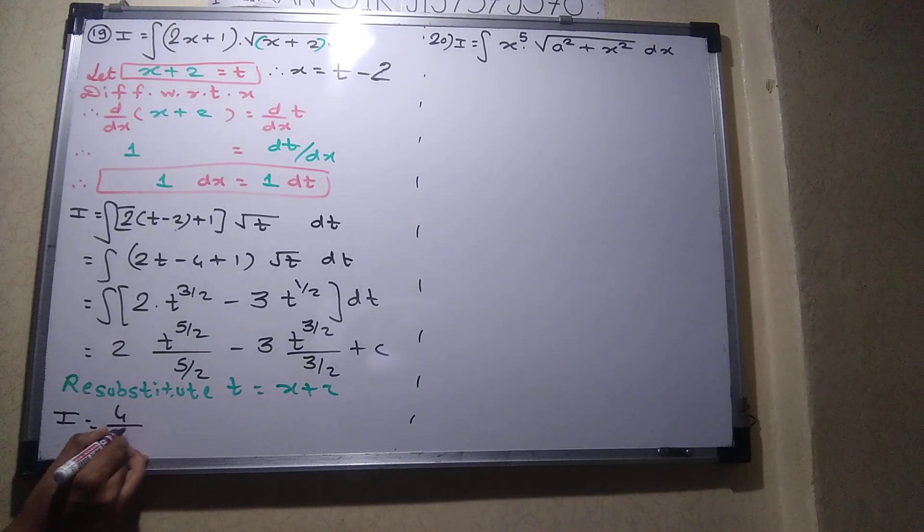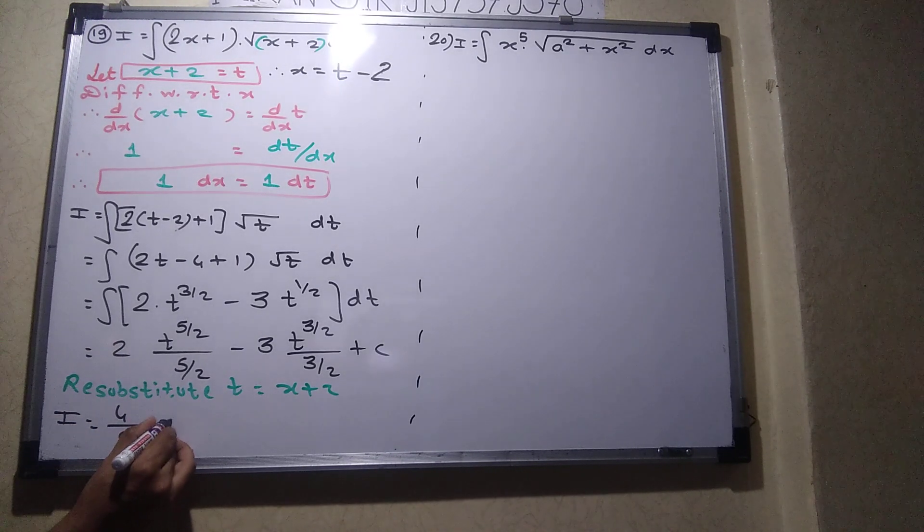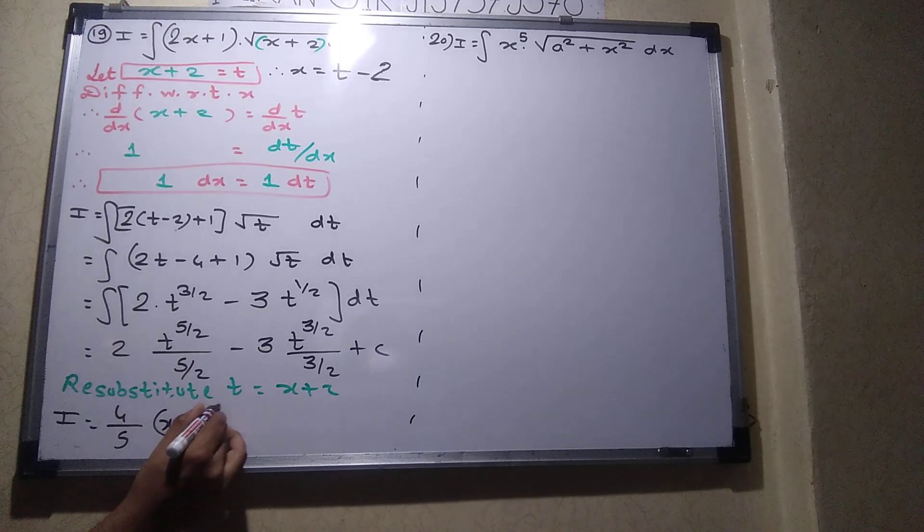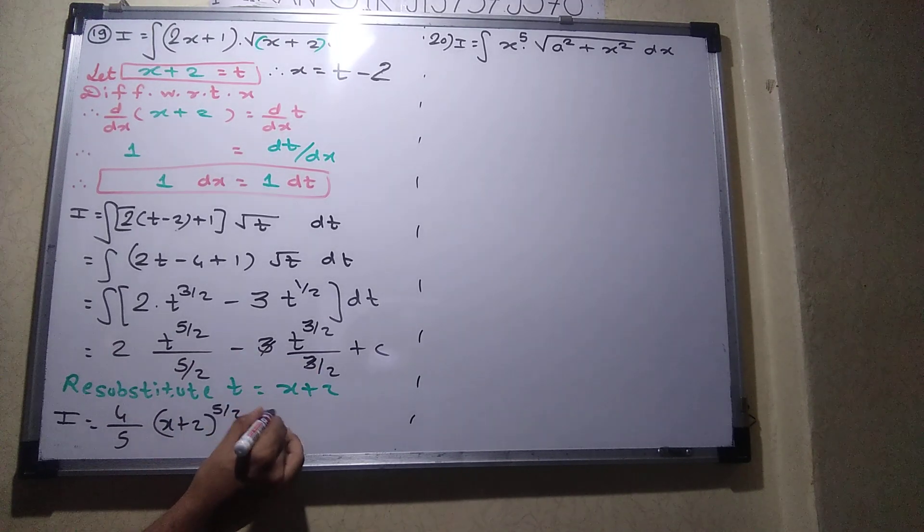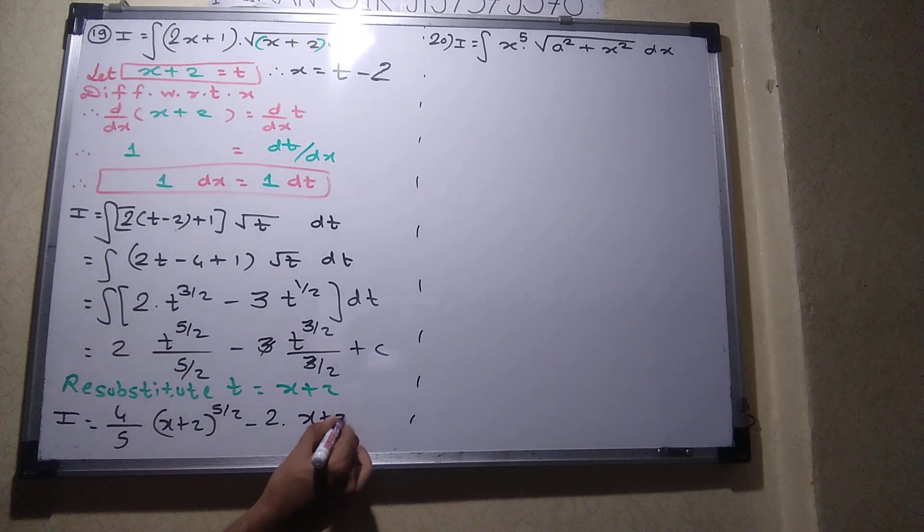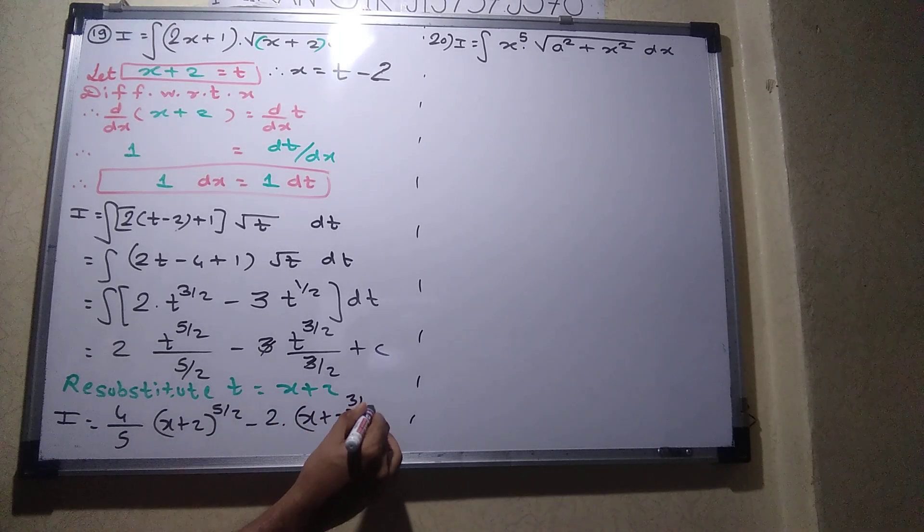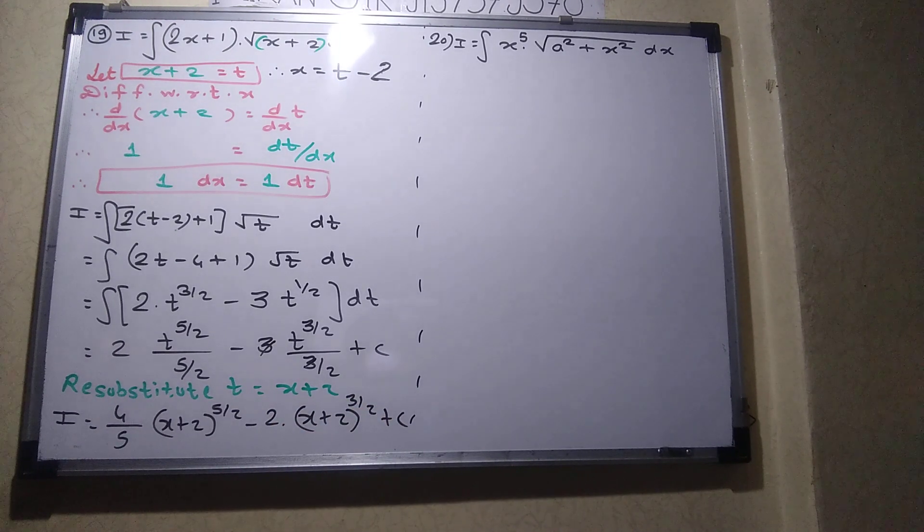So we will do the 4 by 5. Okay. x plus 2 raise to what? 5 by 2. 3, 3 get cancelled. 2. x plus 2 raise to what? 3 by 2 plus C.